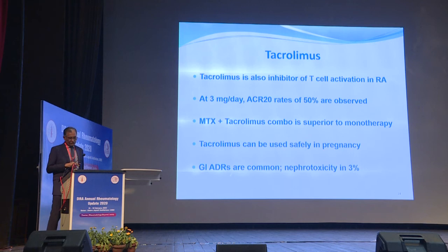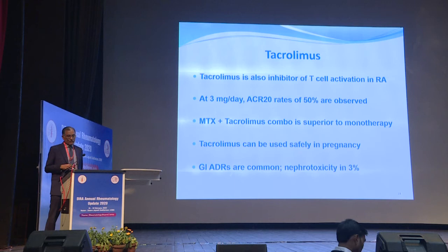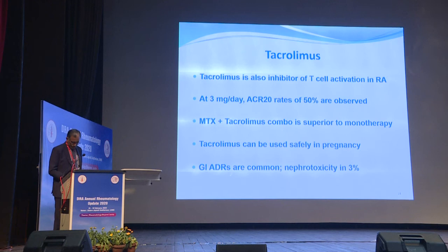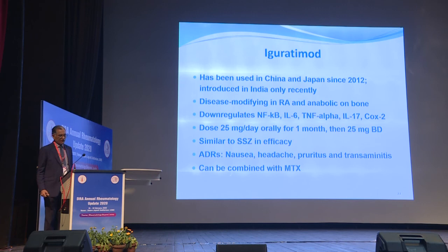Tacrolimus is another calcineurin inhibitor that is useful for disease modification in rheumatoid arthritis. At 3 mg per day, ACR 20 rates of about 50% are achieved. The combination of methotrexate plus tacrolimus is superior to monotherapy. Tacrolimus can be used safely in pregnancy. Common adverse drug reactions are GI and renal, with nephrotoxicity being an important side effect.